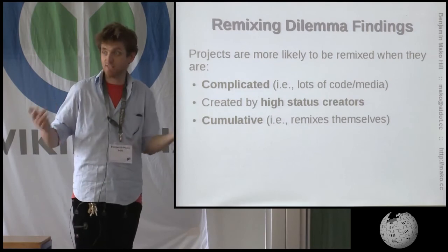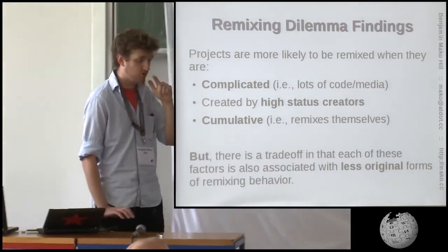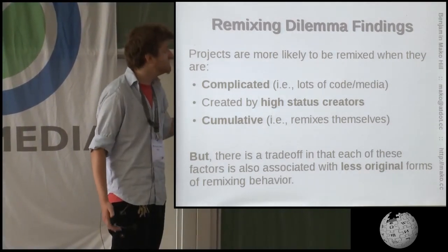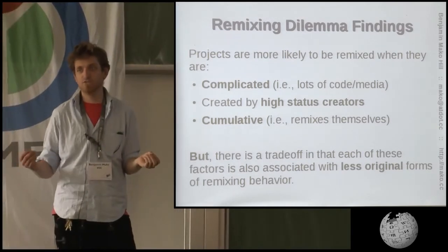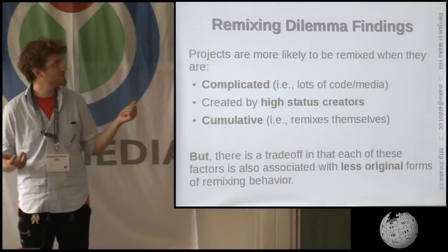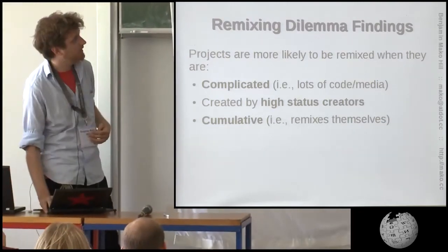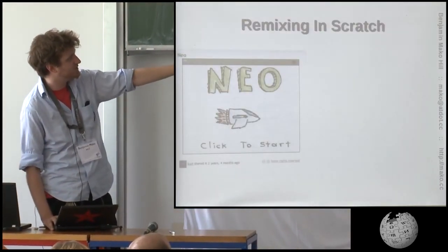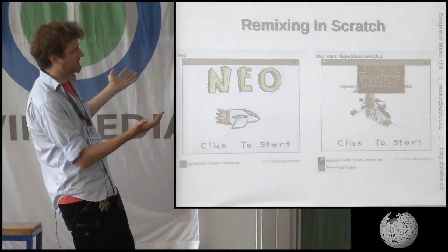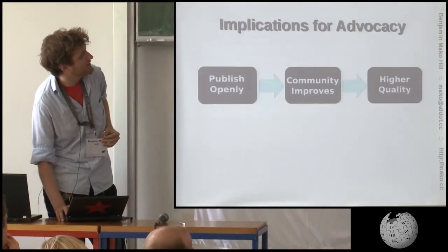The important thing about Scratch is that we can actually make changes to the site to help increase levels of remixing. We can reward people with status, which is something they've done — creating new status-based incentives and methods of status-giving within the site as a way of encouraging remixing. And it works. They can actually drive increased collaboration by understanding the nature of the process. But there's an important trade-off: each of these factors is also associated with less original forms of remixing. The design decisions that increase collaboration seem to be associated with weaker collaboration — people making changes to less code, changing fewer images.